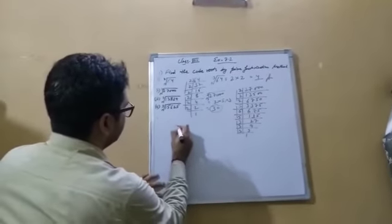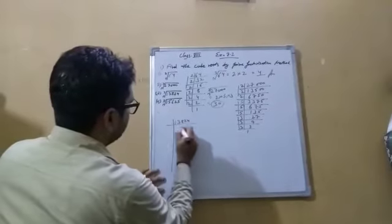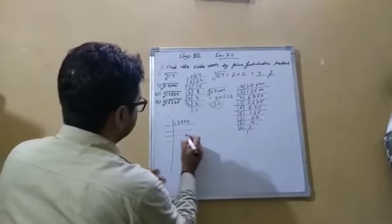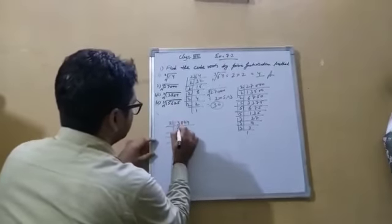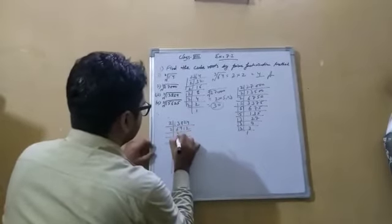Now we have the number 13824. You can continuously divide by 2, beginning the factorization process: 2 into 13824, 2 into 6912, continuing...